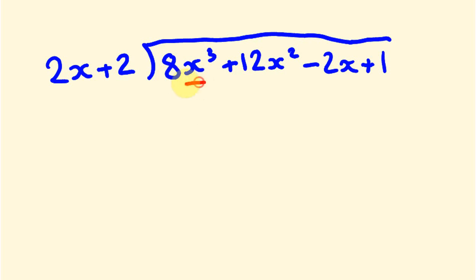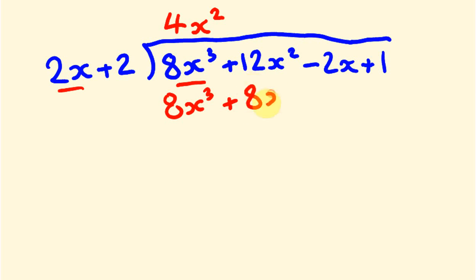We look at 2x and 8x cubed: how many times does 2x go into 8x cubed? 2 goes into 8 four times, and x goes into x cubed x squared times, so the answer is 4x squared. Multiplying out: 4x squared times 2x is 8x cubed, and 4x squared times 2 is 8x squared. Subtracting: 8x cubed cancels, and 12x squared minus 8x squared gives us 4x squared. We carry down minus 2x plus 1.